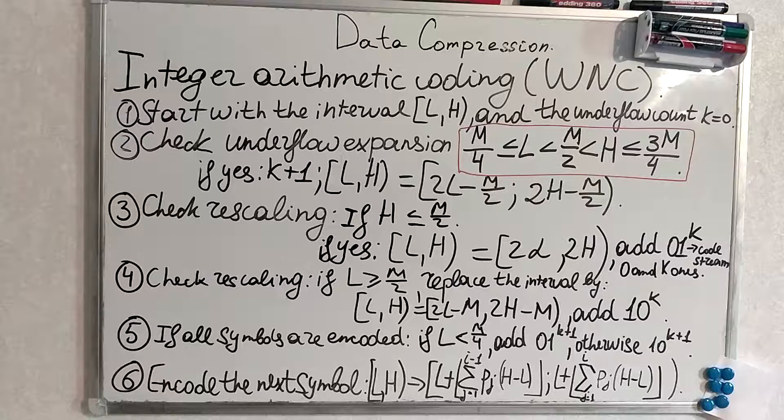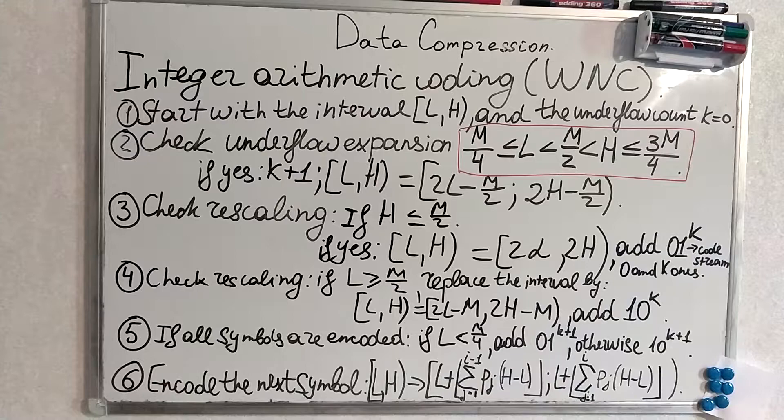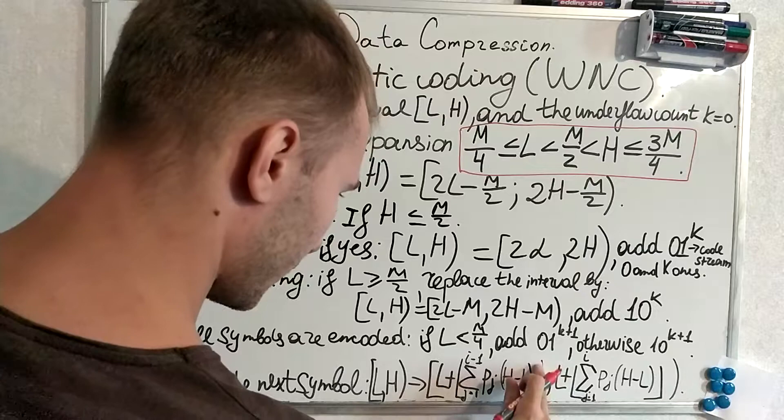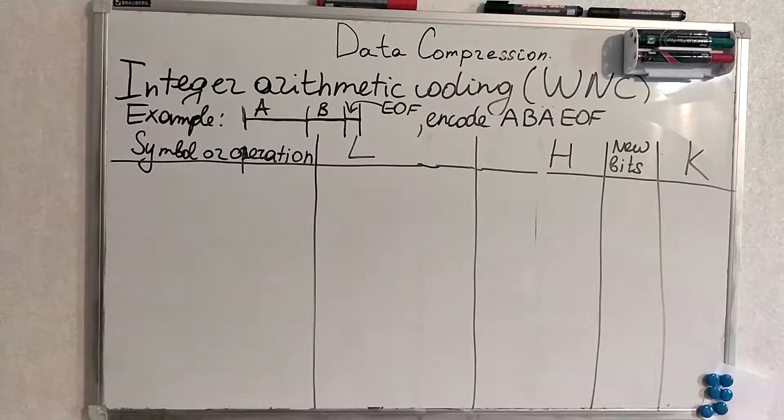And each next symbol is encoded by the formula. I think it's clear what's written here. This thing, this strange thing, means floor. If you don't understand arithmetic coding, I highly recommend you to start from pure arithmetic coding. Because this theme is harder than arithmetic coding. It includes it.